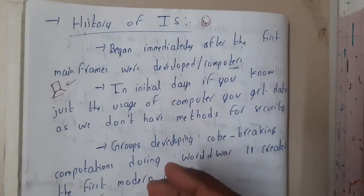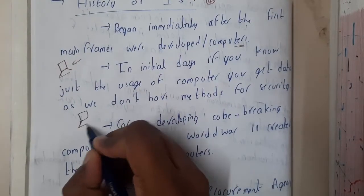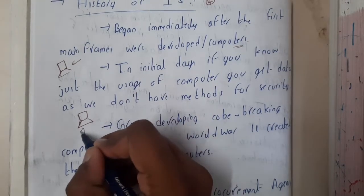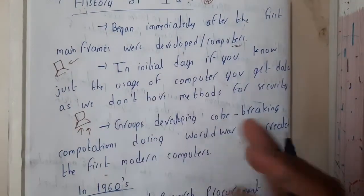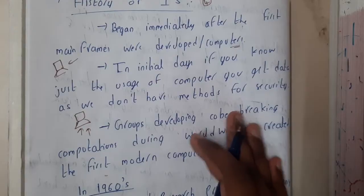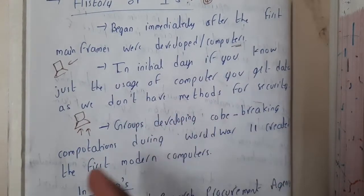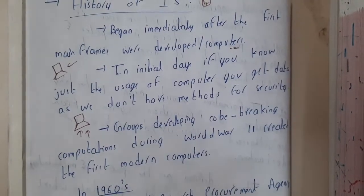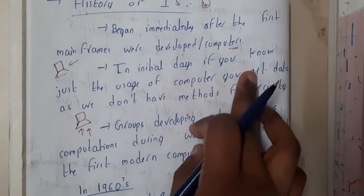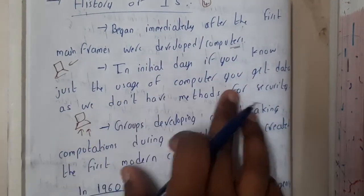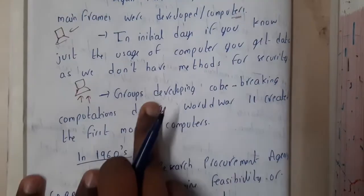In the initial days, if there was a computer and someone knew how to operate or interact with it, they could just get into the system and access the data. At that time there was no kind of protection, no authorization, no password concepts. The data was free and open — the only thing you needed was knowledge of how to operate the system.